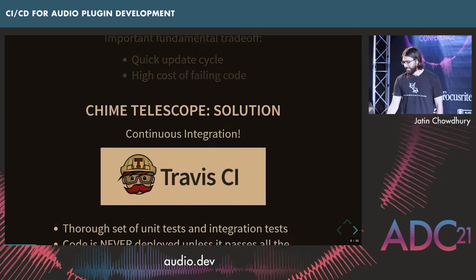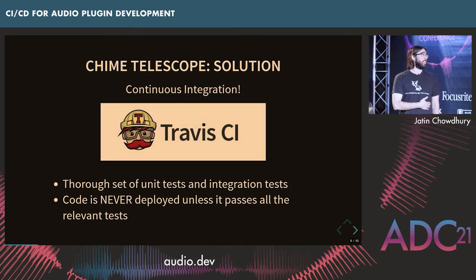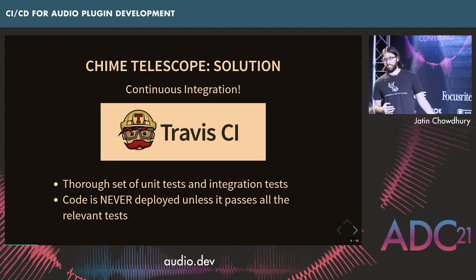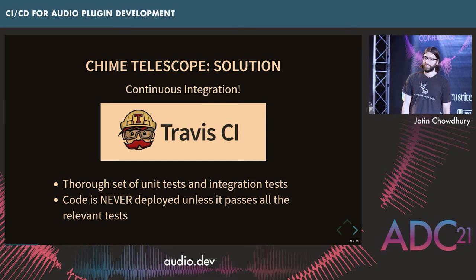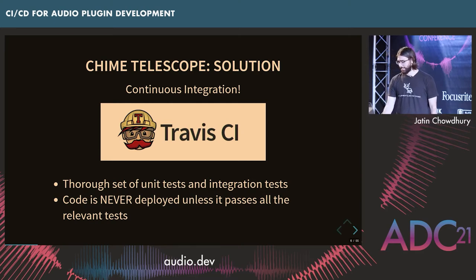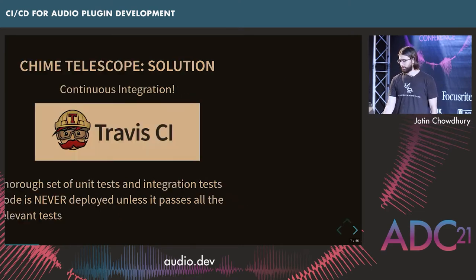The solution the team came up with was to use a service called Travis CI. They had a very thorough set of unit tests and integration tests and made sure all of those tests passed before deploying new code to the pipeline. This was back in 2017 and I'm sure their process has gotten much more sophisticated since then. But for me, this was how I discovered CI and CD and came to find it was something I really enjoyed working on.